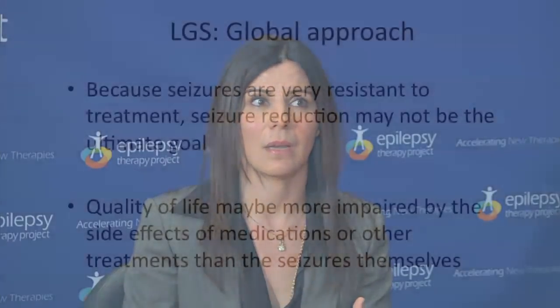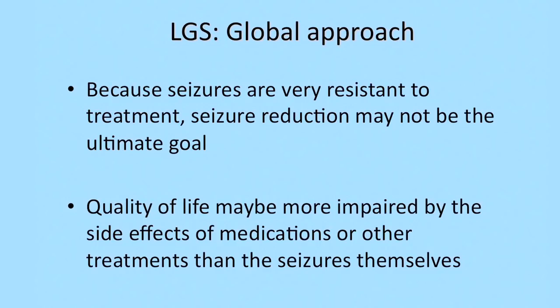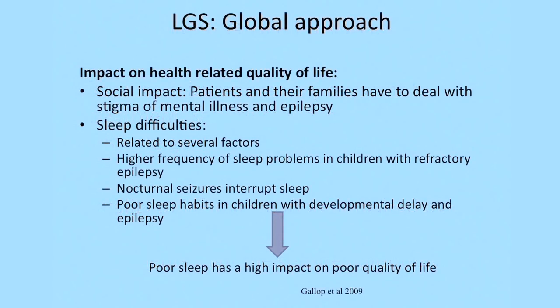Treatment aims may differ depending on the stage of disease and the particular child. For a newly diagnosed child undergoing developmental deterioration, a more aggressive approach is warranted. Quality of life in these patients is impacted by social stigma of intractable epilepsy and cognitive and behavioral issues. Sleep difficulties have a high impact — sleep may be interrupted by frequent seizures, affected by medications, or simply represent poor sleeping habits common in patients with intractable epilepsy and behavioral problems.